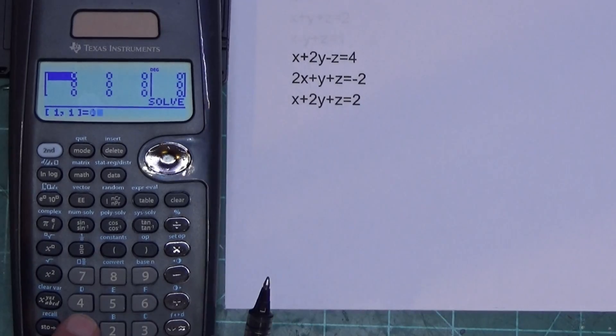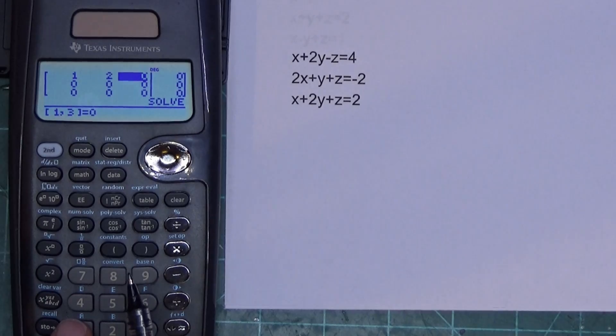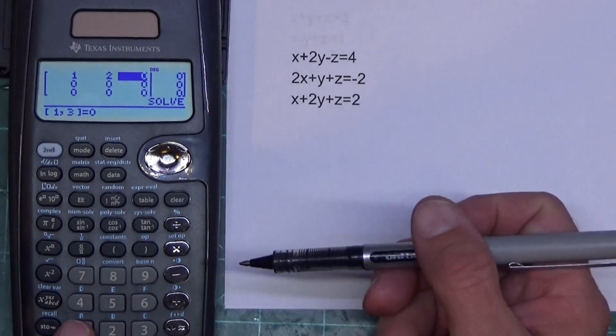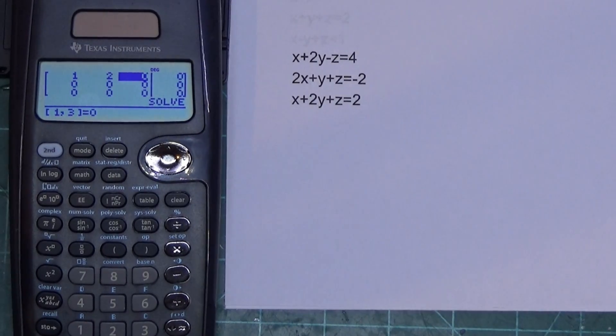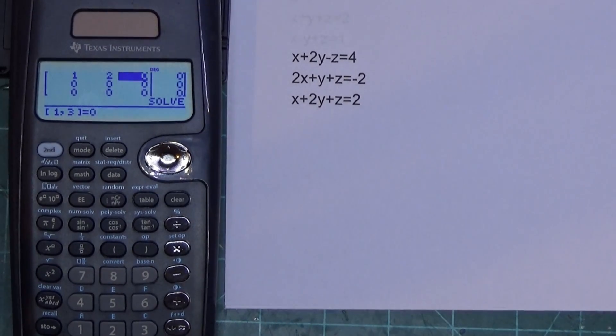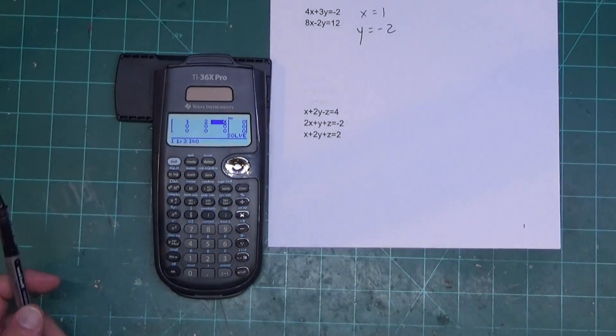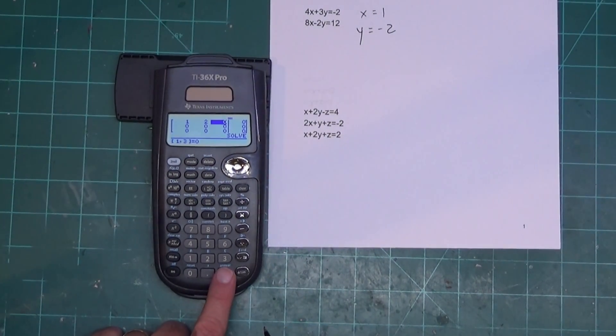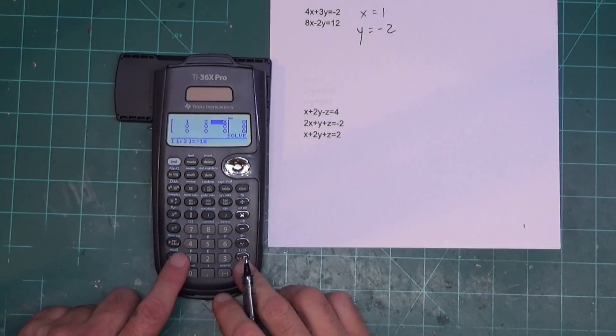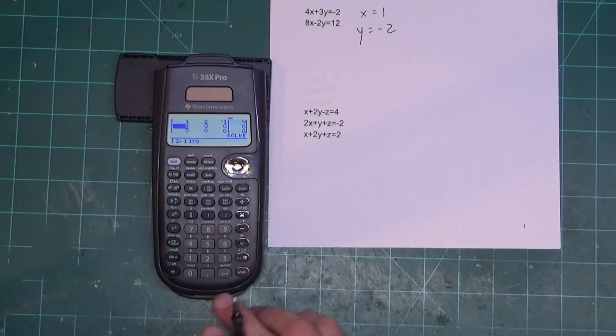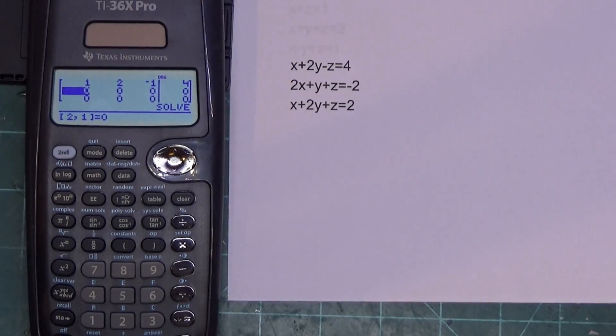So I'm going to put 1, enter, 2, enter, negative 1. Now remember again, you're not using the minus sign right here. You're using the negative sign down there at the bottom. And I didn't want to do this, but if I do it, you can see the whole calculator using the negative sign down here. So I'm going to put minus 1, enter, and 4, enter. I think it's better if you see the screen. So I'm going to zoom back in.